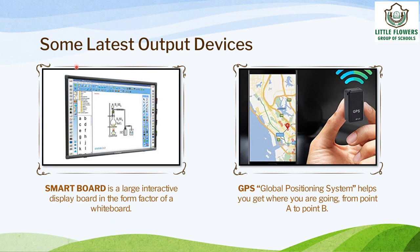Now, let's look at some latest output devices. This is a smart board. A smart board is a large interactive display board in the form factor of a whiteboard. Next is GPS, which stands for Global Positioning System. GPS helps you get from point A to point B and helps you find your location.